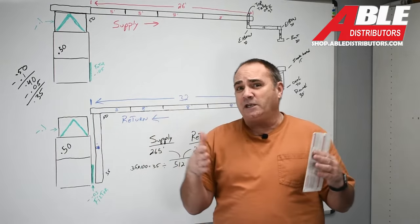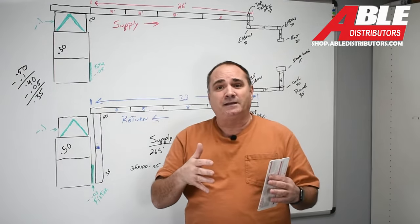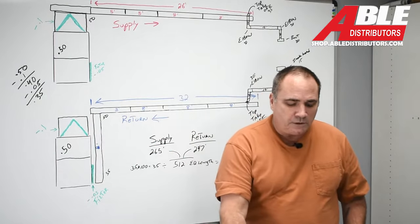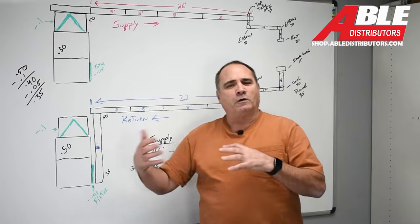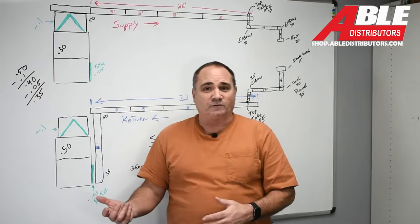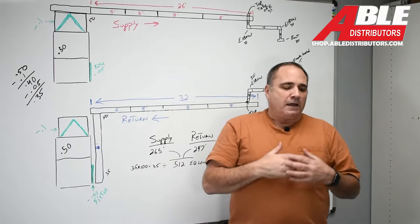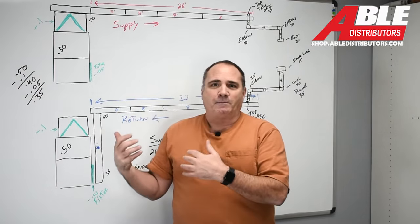Any single time we change direction or we reduce the size, we have equivalent length that we add up. Now we're used to using those terms, equivalent length, when we're venting a 90% furnace. Every elbow is 5 feet or 10 feet or whatever it is. This is the same type of thing.